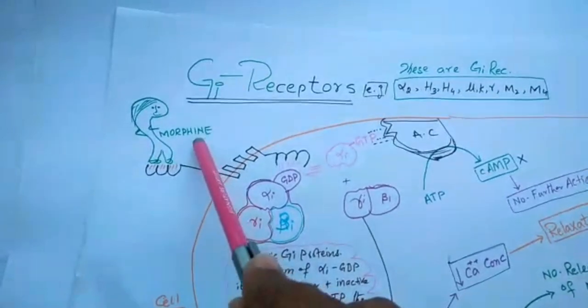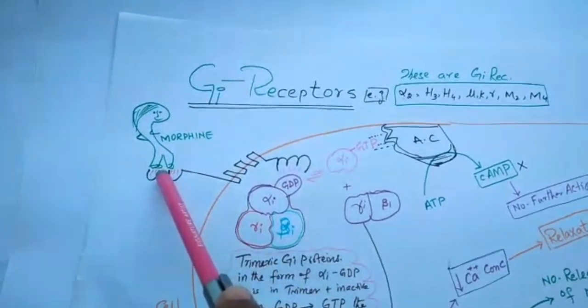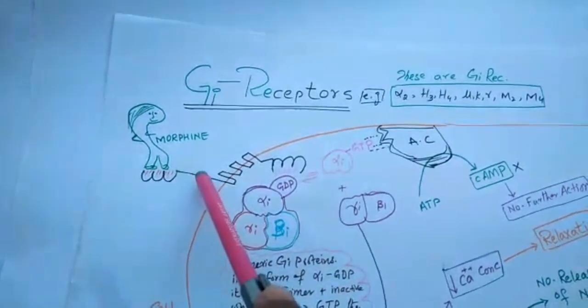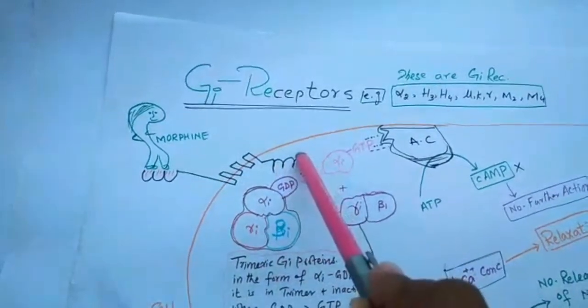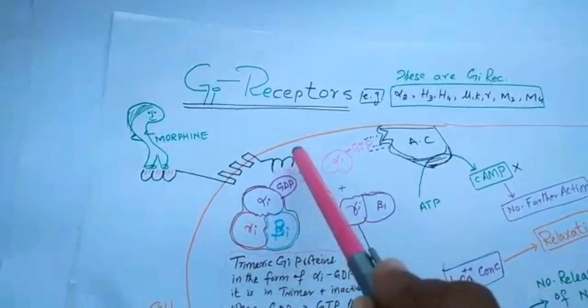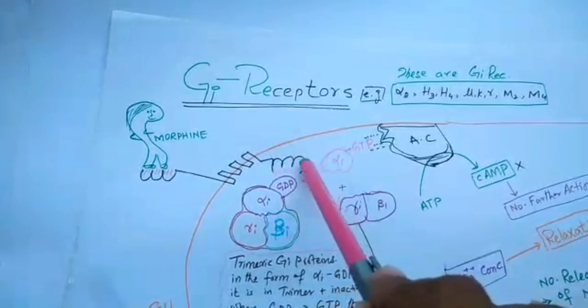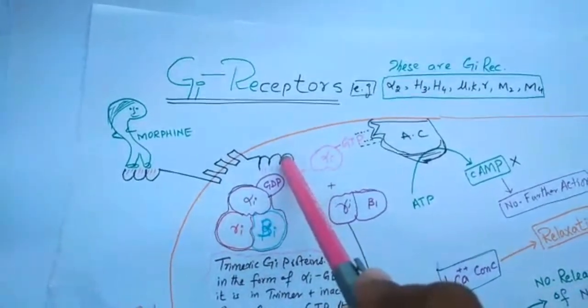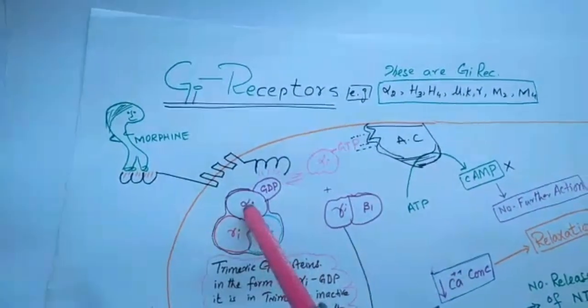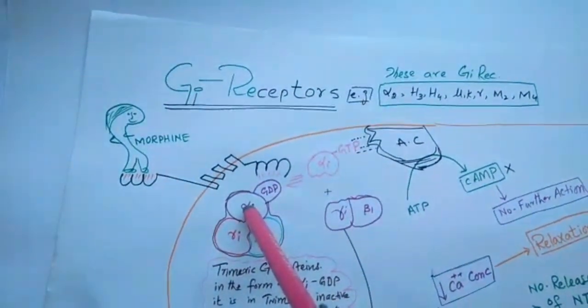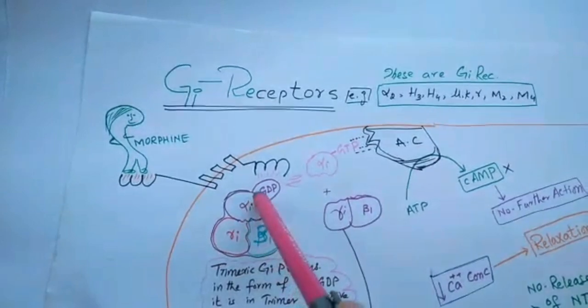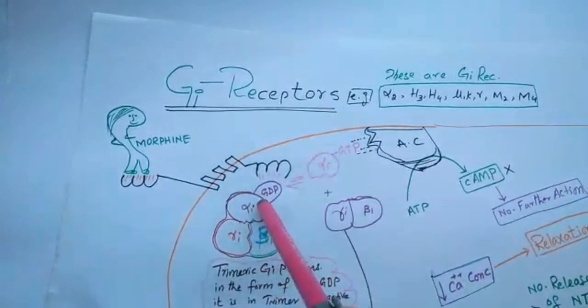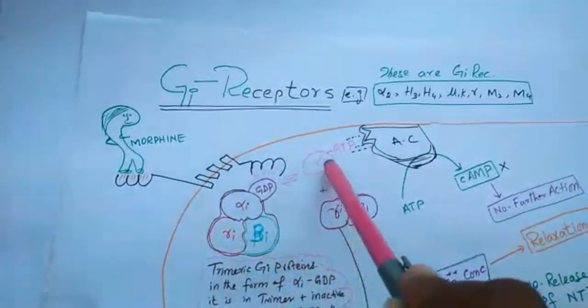Once morphine binds here, it stimulates the intracellular domain. When this intracellular domain is activated, it phosphorylates alpha-i and converts the GDP of alpha-i into GTP.